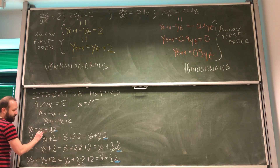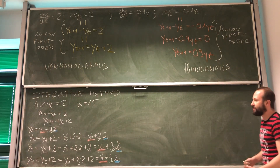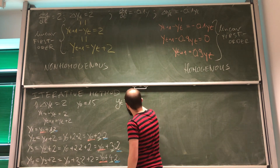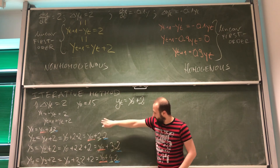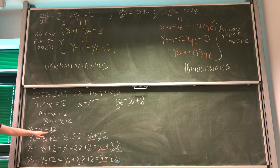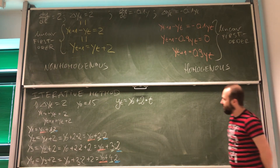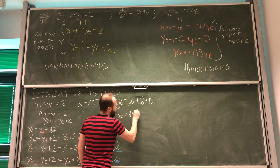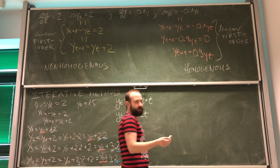What appears everywhere is y0. Knowing this, we can deduce the general pattern: yt = y0 + 2t. After applying the initial condition y0 = 50, we get yt = 50 + 2t. As you can see, this was not very complicated.